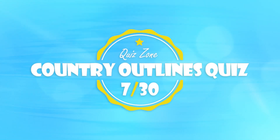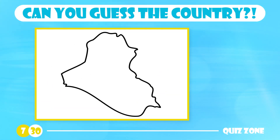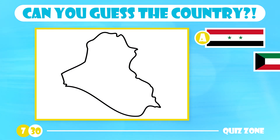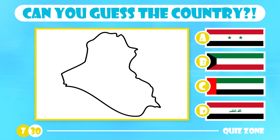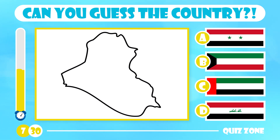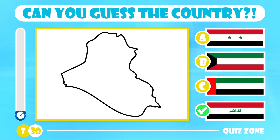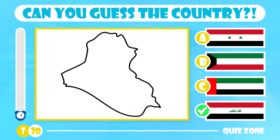I'm making it more challenging. Which country is depicted here? Is it Syria, Kuwait, United Arab Emirates or Iraq? Iraq is the correct answer. Bordered by Turkey to the north, Iran to the east, Kuwait to the southeast, Saudi Arabia to the south, Jordan to the west and Syria to the west. Around 37 million citizens live in this country.